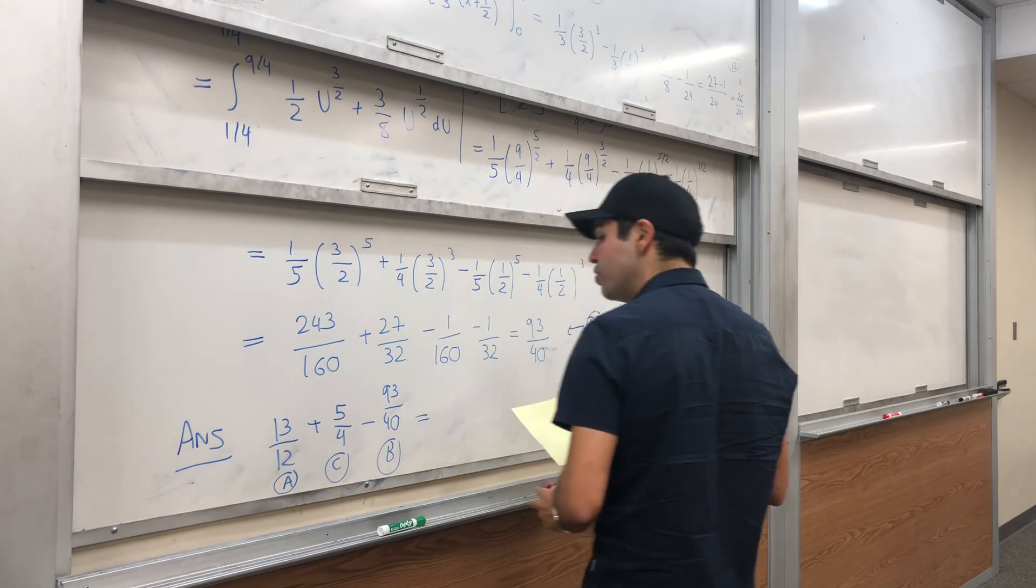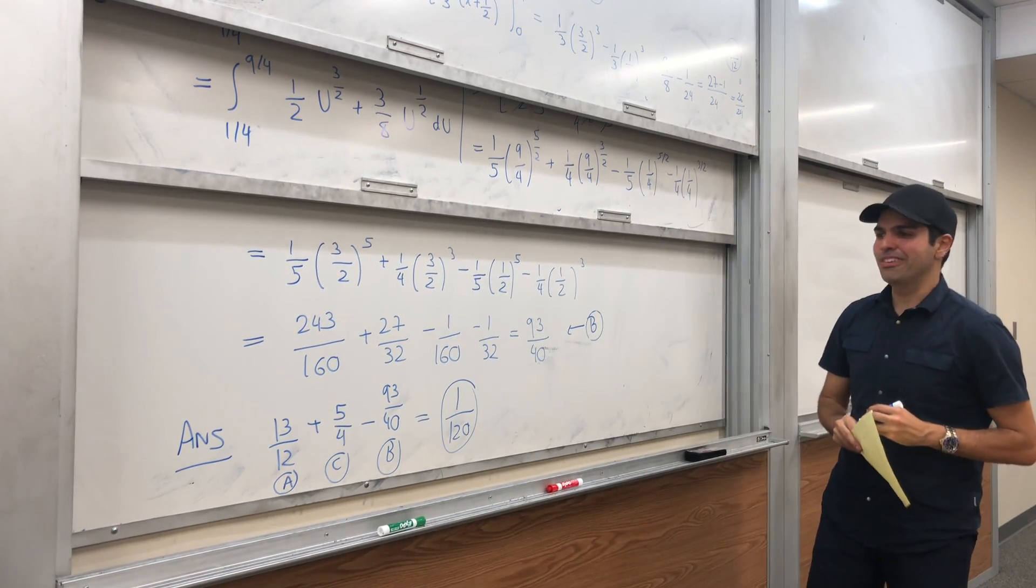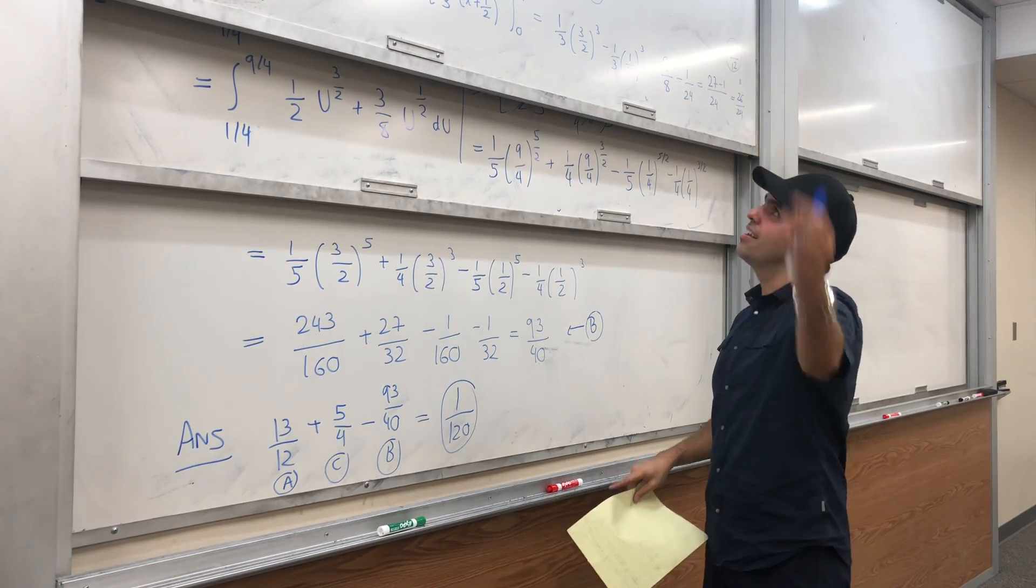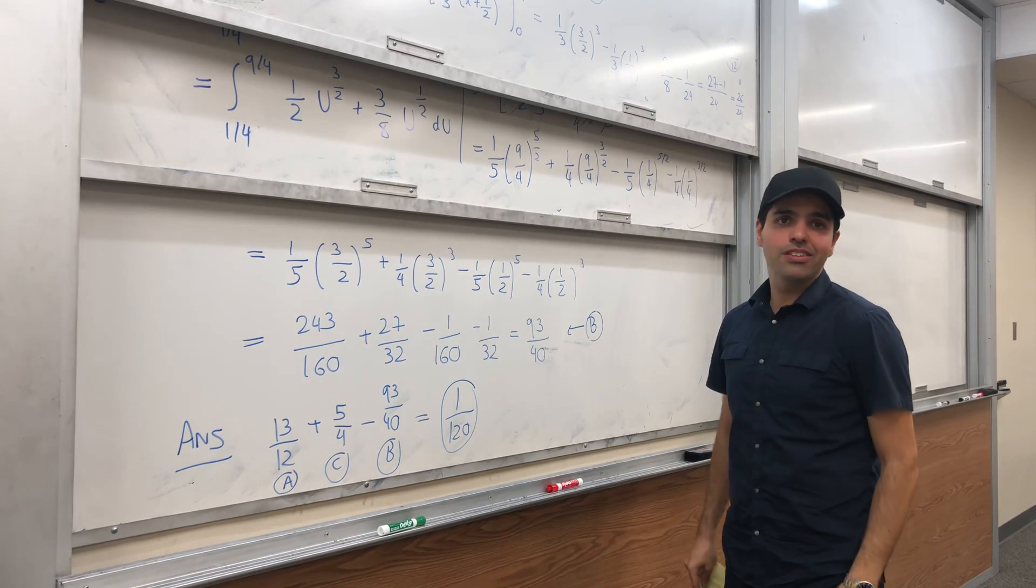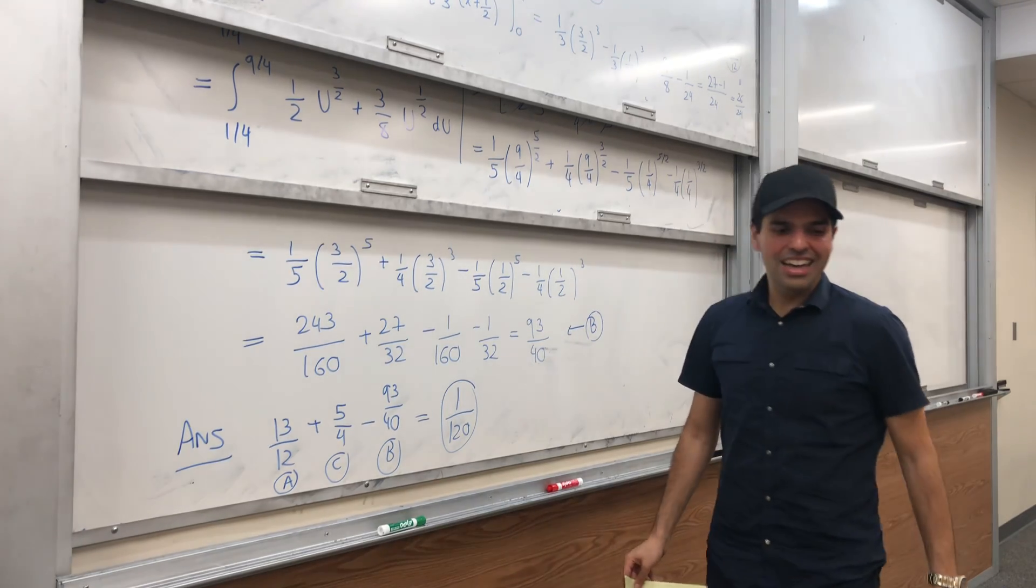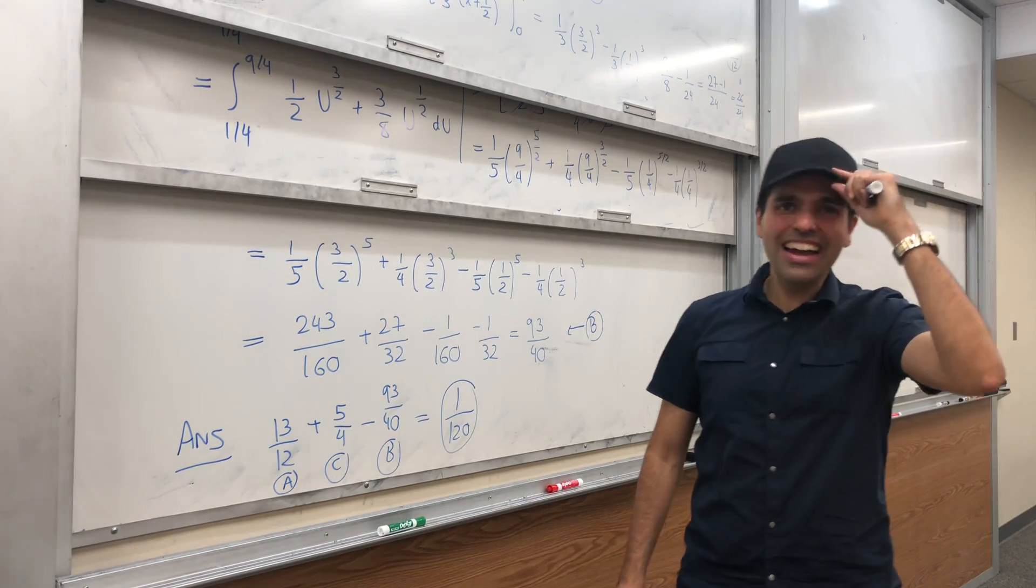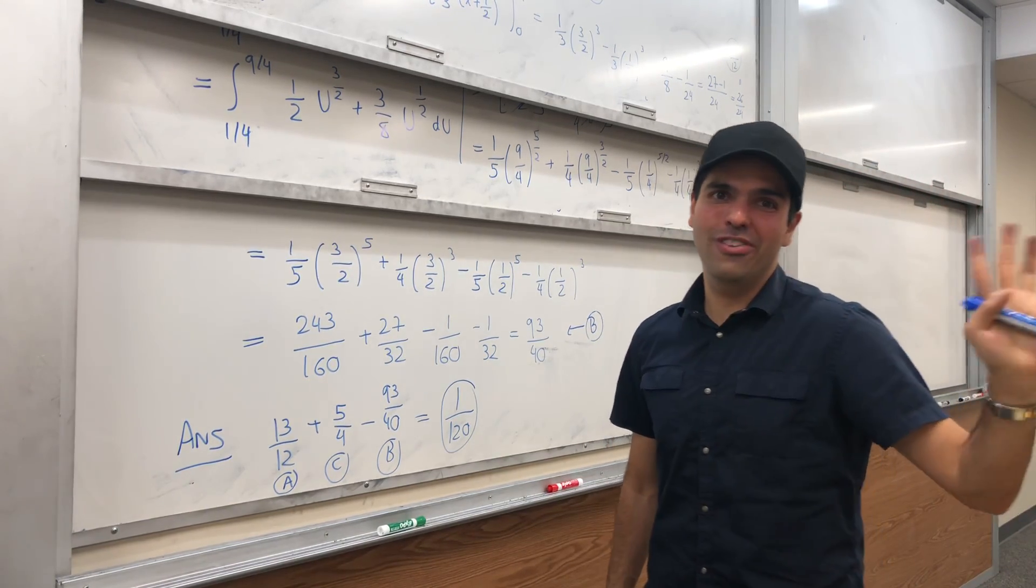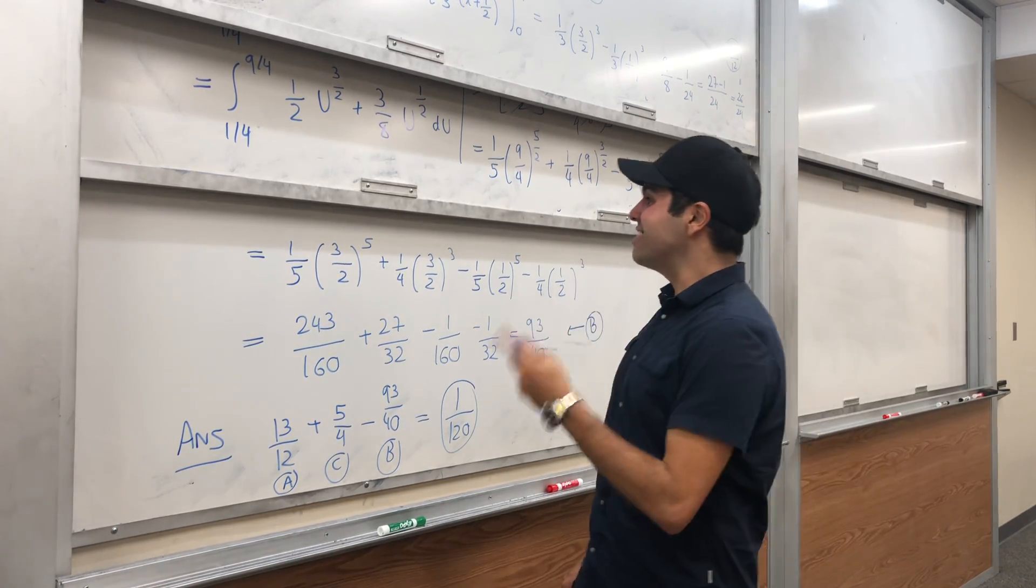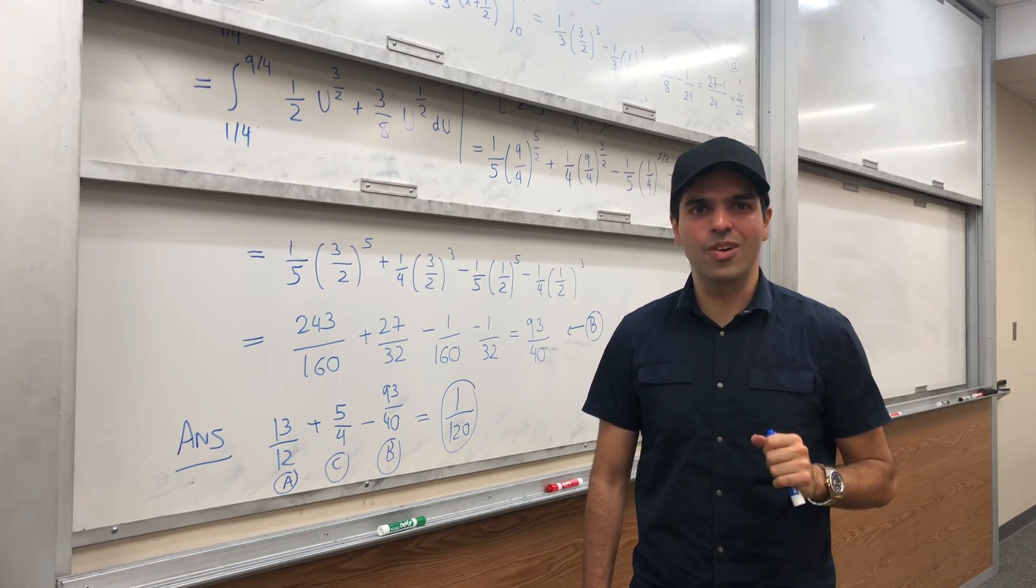And if you do that, interestingly, it simplifies to 1/120. So what a nice simplification! To connect with the other video, the volume of this solid rotated by y over x becomes 1/120. And take that, Wolfram Alpha! I did it, you couldn't. At least on the smartphone. I think I tried it on the desktop and it worked, so... But still, pretty cool. So if you like that and you want to see more math, please make sure to subscribe to my channel. Thank you very much.